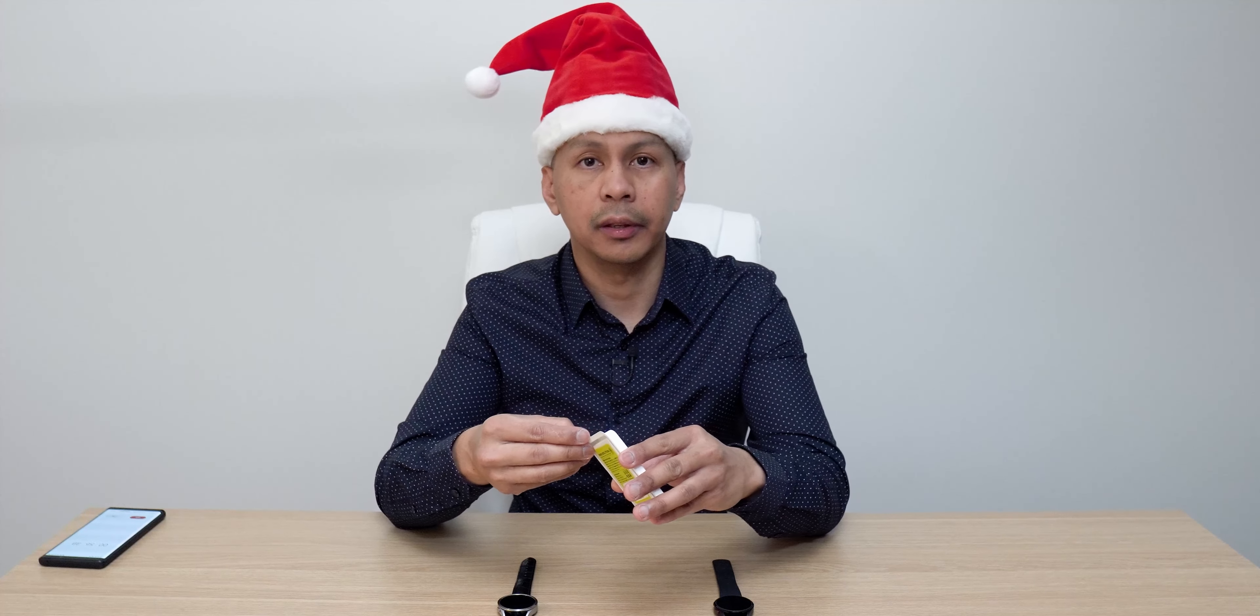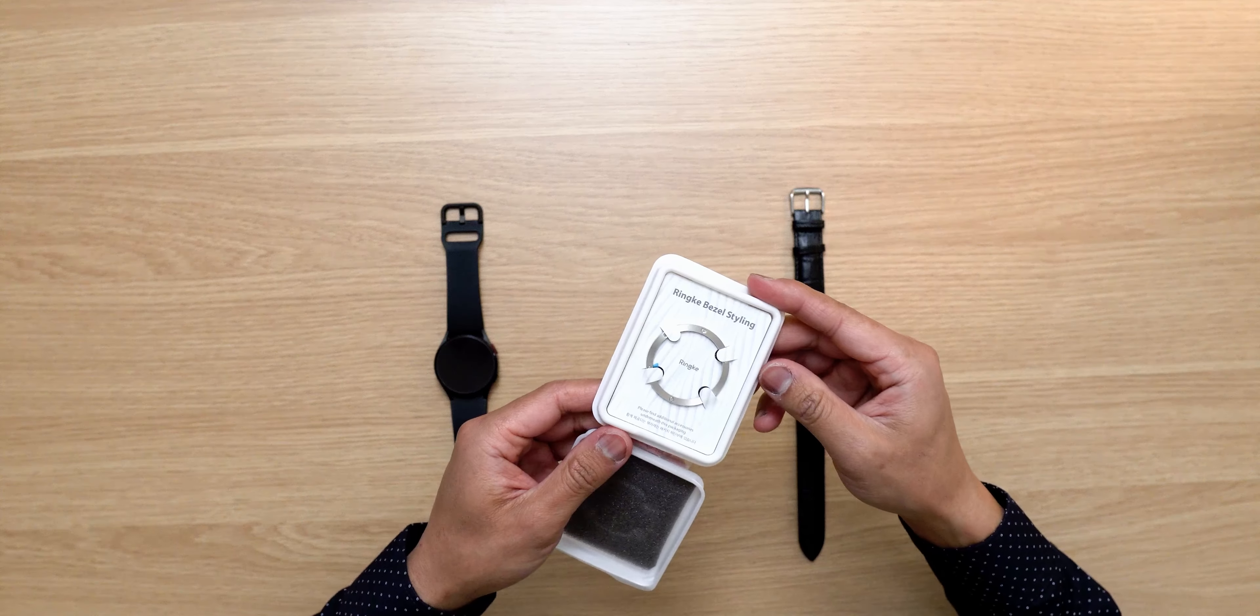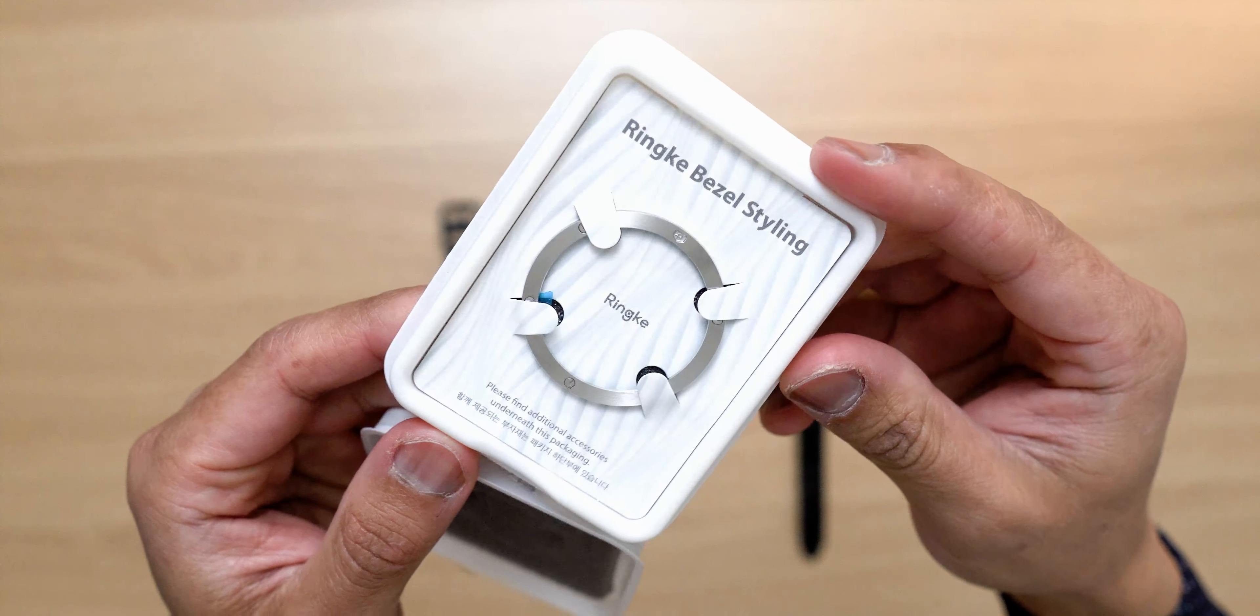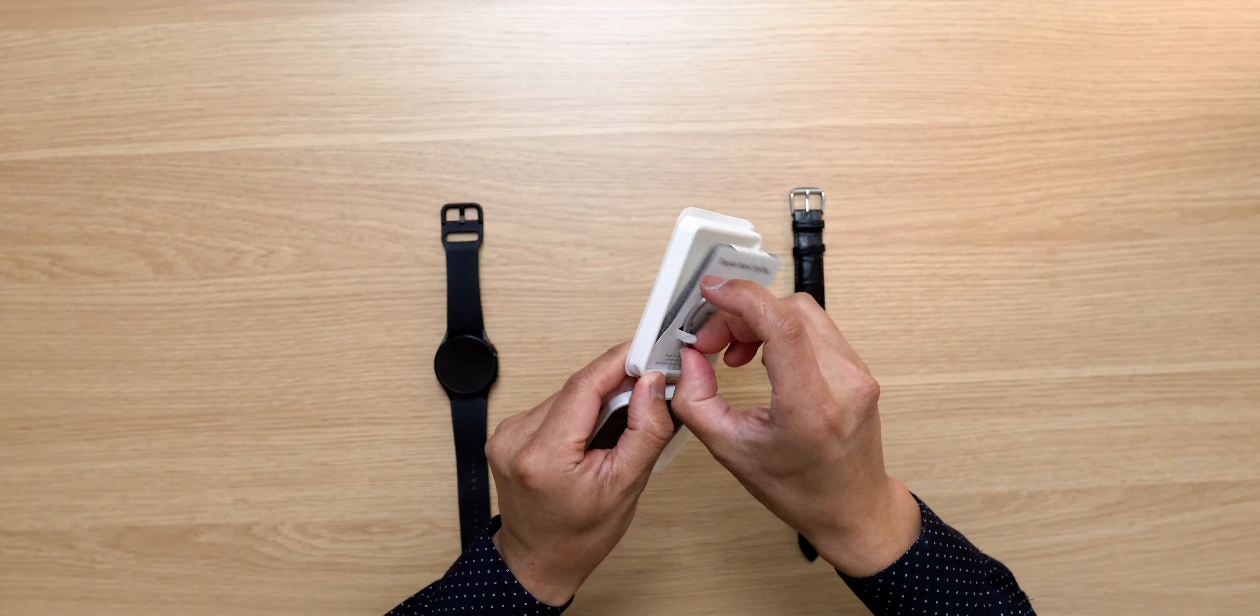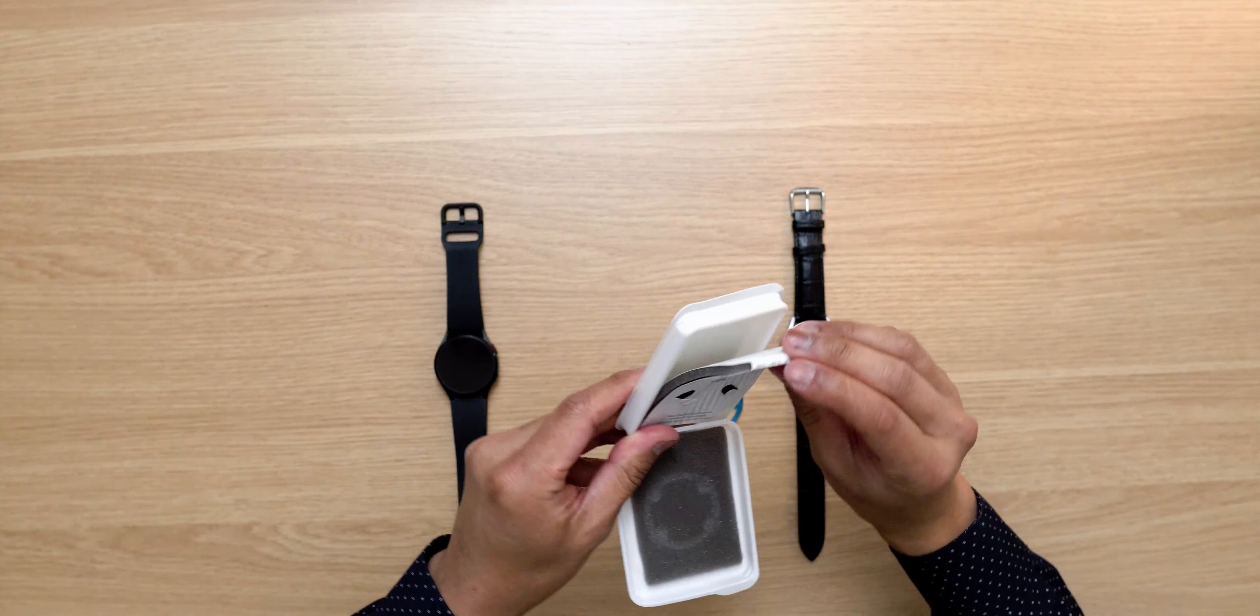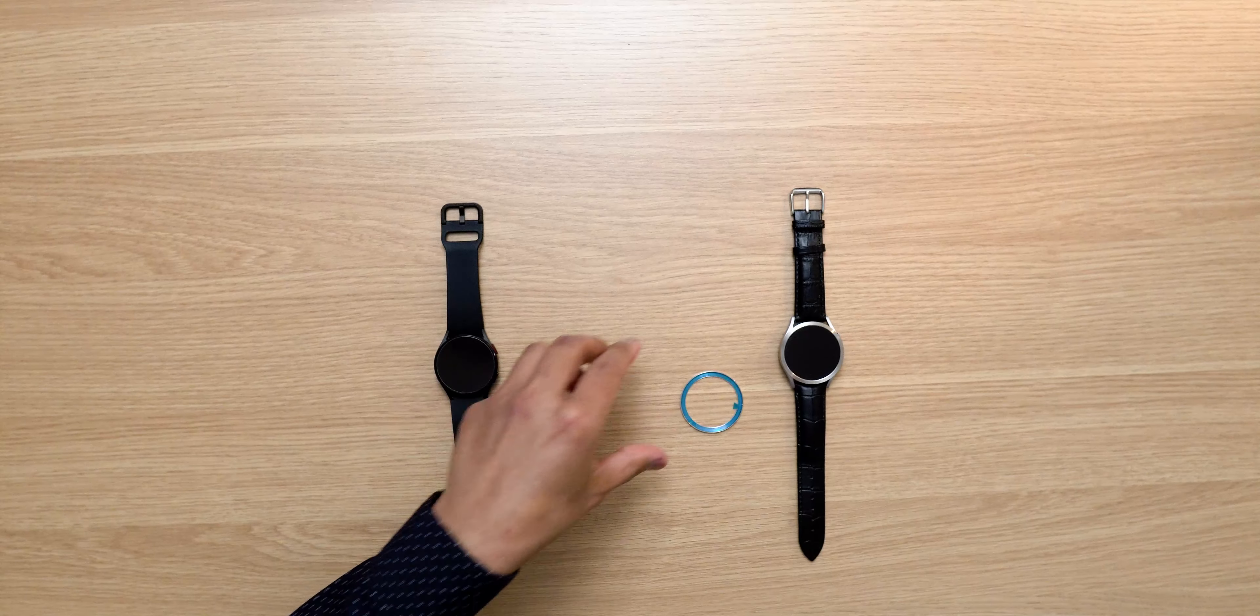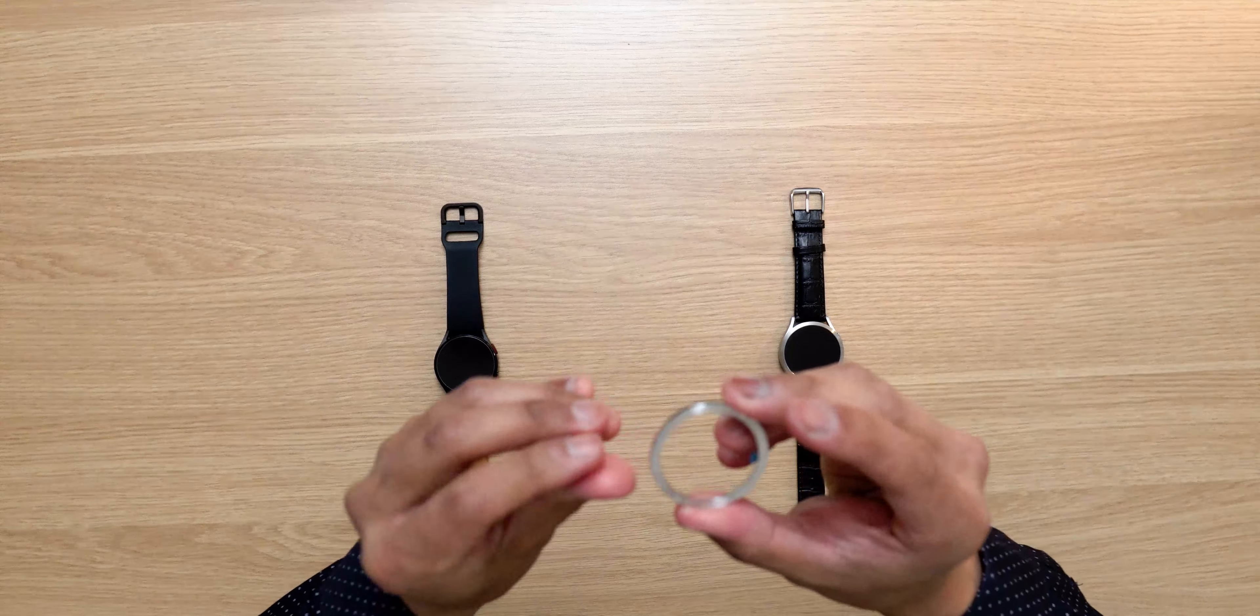So without further ado guys, let's check this out and see what it looks like on our Watch 4. Okay, so here we go, there is the bezel. Inside the box there's nothing else as usual.